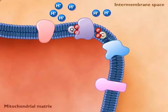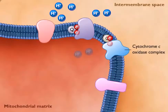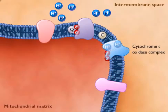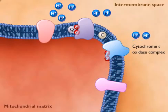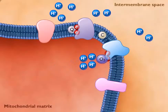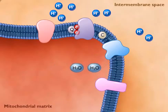Cytochrome C transfers electrons to the cytochrome C oxidase complex. Protons are also transferred to the outside of the membrane by the cytochrome C oxidase complex. The cytochrome oxidase complex then transfers electrons from cytochrome C to oxygen, the terminal electron acceptor, and water is formed as the product.